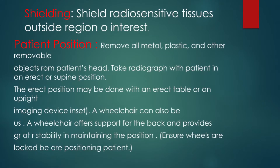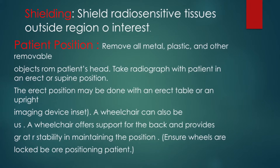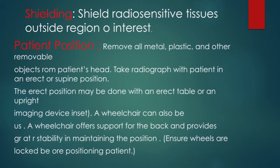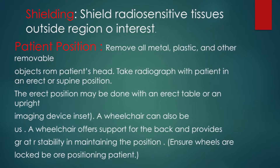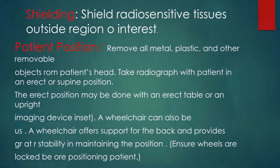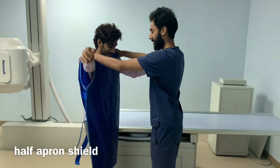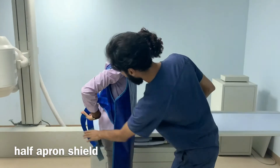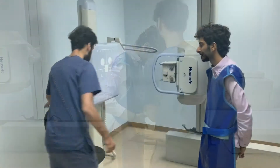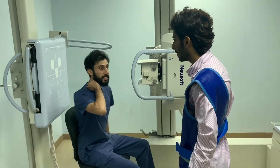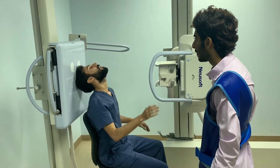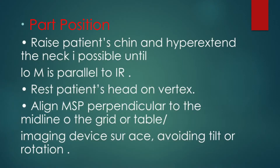The SMV position. The patient's position can be erect or prone. He will help the patient wearing the shield. After that, he will demonstrate the position for the patient so the patient can do the position without any confusion. Part position: raise chin and hyperextend neck until OML is parallel to IR.